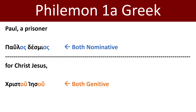Say it with me: Paul, a prisoner — Paulos desmios — for Christ Jesus — Christu Jesu. Let's say the whole thing together: Paul, a prisoner for Christ Jesus — Paulos desmios Christu Jesu.